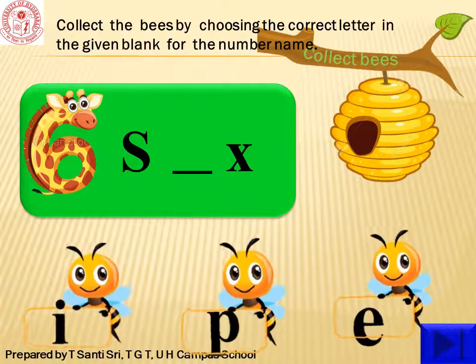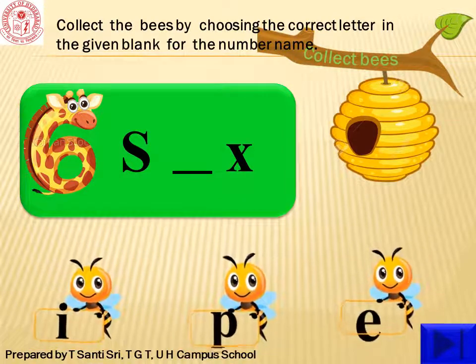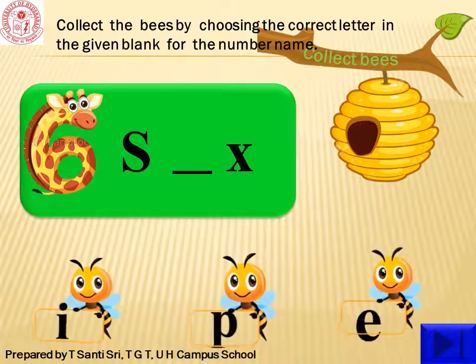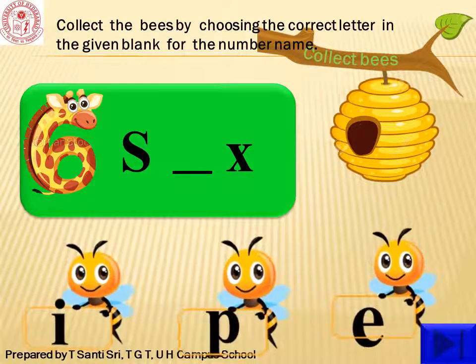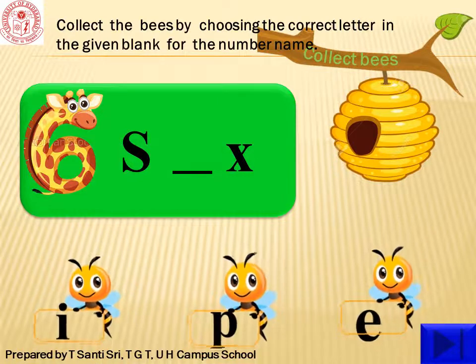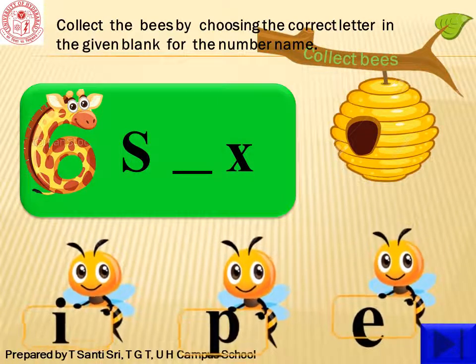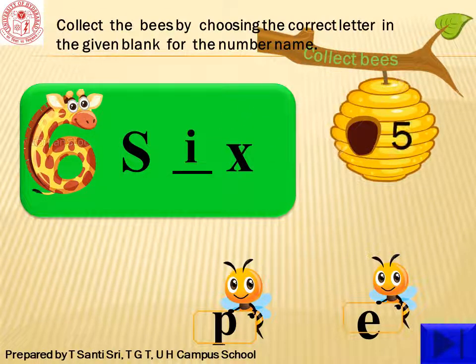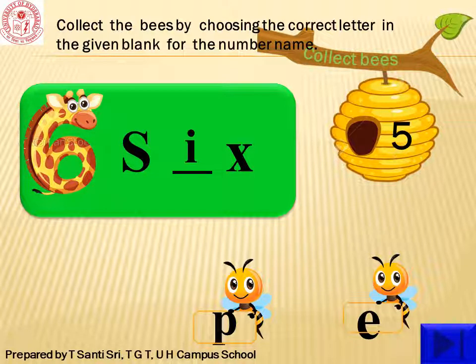What is the number here? Yes, it's 6. What is the spelling? S-dash-X. Which letter will come in that blank? Yes, it's I. S-I-X, 6. Children, here we are collecting bees to make honey. Till now, how many bees are we collecting? Yes, we collected five bees.